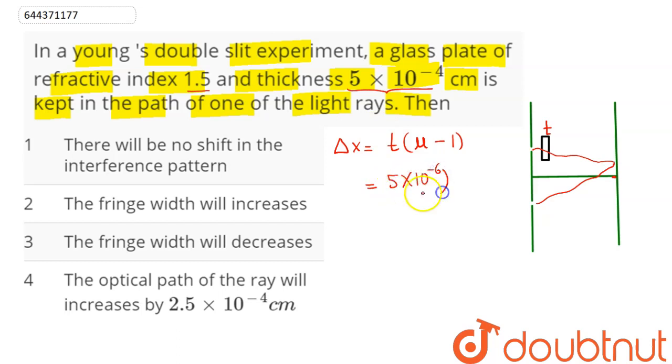Now, thickness is 5 into 10 power minus 6 in meters. This refractive index here is 1.5 minus of 1, hence, this comes as 0.5.